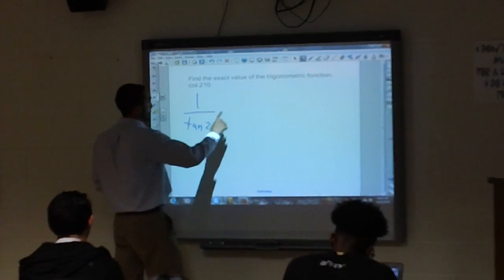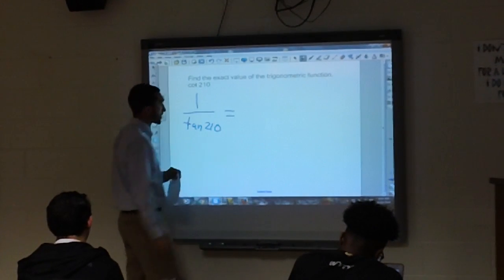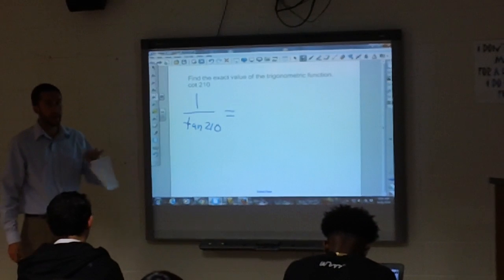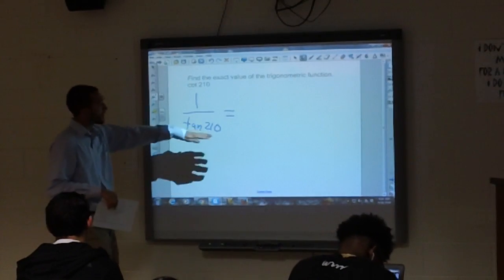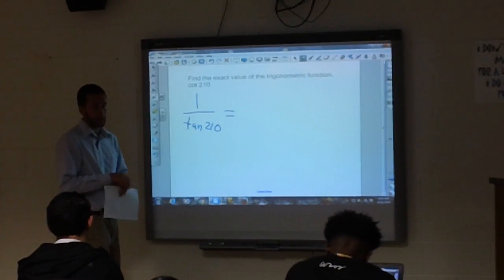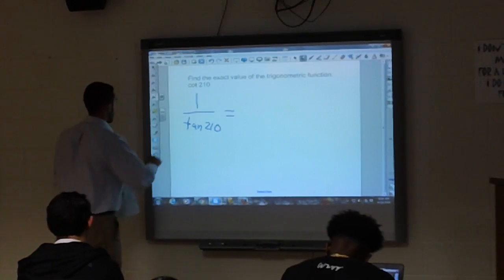Okay, 1 over tangent. Well we can't do tangent of 210 degrees, right? Our angles have to be less than 90 degrees, so we have to find the reference angle of tangent of 210 degrees. 30. It is 30.